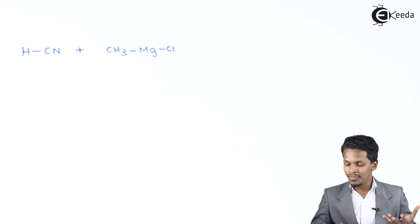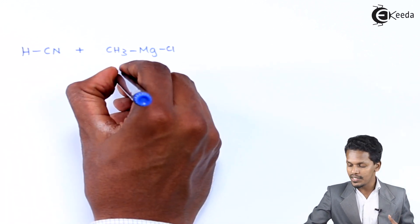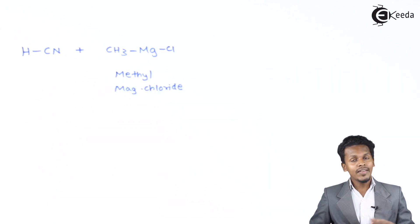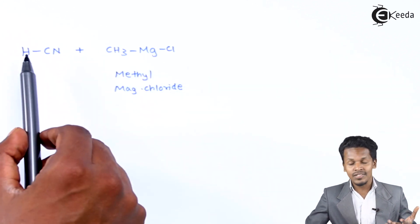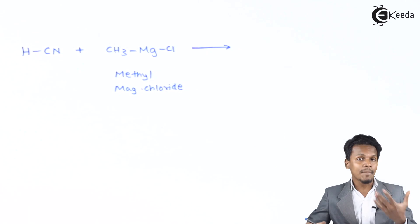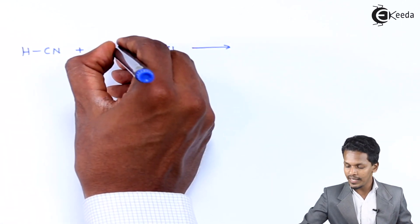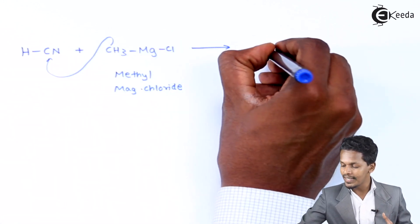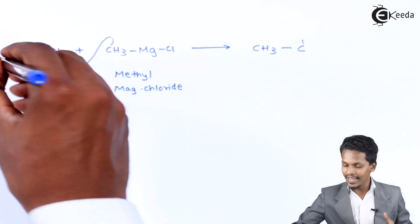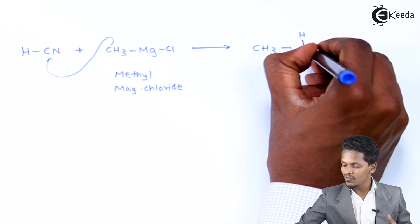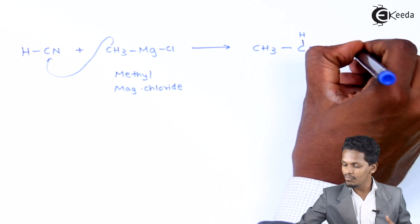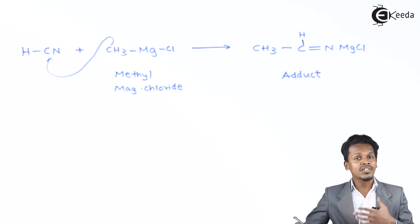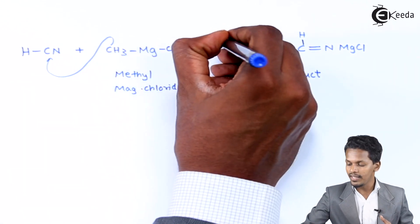The Grignard reagent is CH₃MgBr, also known as methyl magnesium bromide (or methyl magnesium chloride). When methyl magnesium chloride reacts with HCN, an imine complex is formed: the CH₃ group attaches to the carbon while MgX attaches to the nitrogen atom, giving CH₃–C(H)=N–MgCl as the adduct intermediate, formed in the presence of dry ether as solvent.